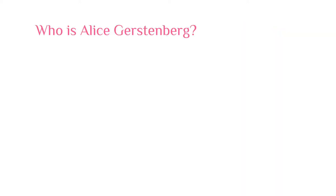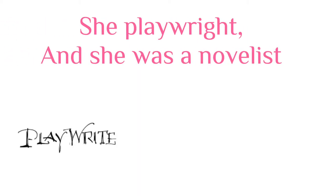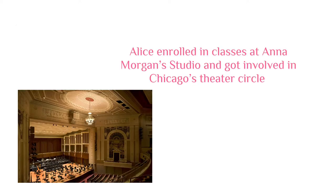Who is Alice Kirstenberg? She is the author of the one-act play Fourteen. She was born on August 2, 1885. She was a playwright and a novelist. She graduated from Bryn Mawr College in 1907. Alice enrolled in classes at Anna Morgan Studio and got involved in Chicago's Theater Circle.